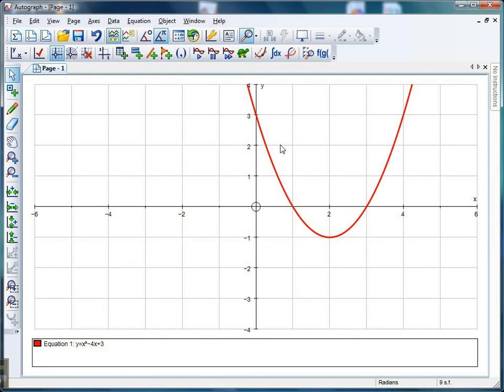Give that a select and delete. We're going to need to find the area between 0 and that crossing point, which looks like it's 1, and 1 and that crossing point, which looks like it's 3.